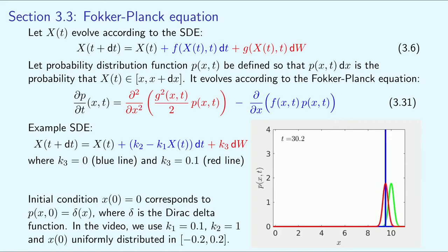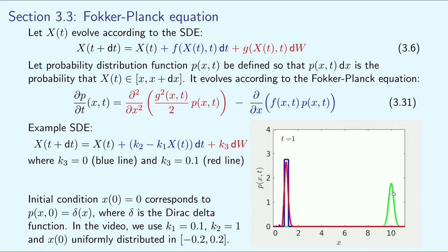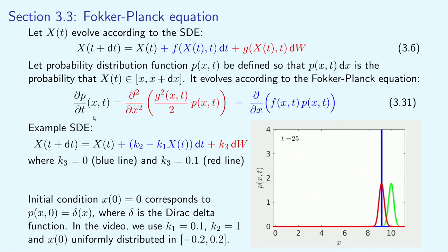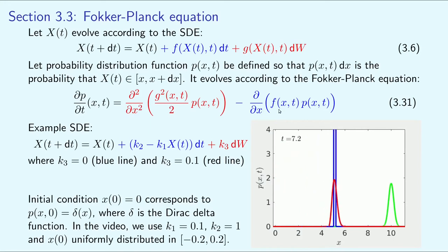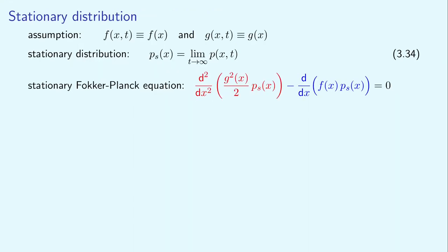At the end, the probability distribution converges to the steady state distribution, plotted here as the green histogram. The stationary distribution can be obtained by solving the stationary Fokker-Planck equation, which we obtain from the Fokker-Planck equation by setting the left-hand side equal to 0. To do that, we assume that our coefficients f and g only depend on x, but not on time t. In this case, we drop the time dependence of f and g, and define the stationary probability distribution function p_s(x) as the limit of p as t goes to infinity. It satisfies the stationary Fokker-Planck equation, which is an ordinary differential equation that we can solve explicitly.